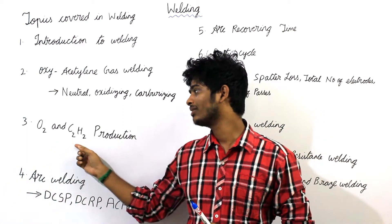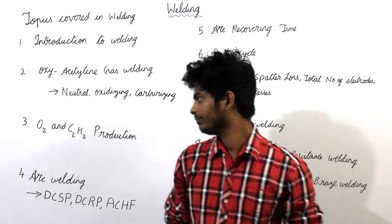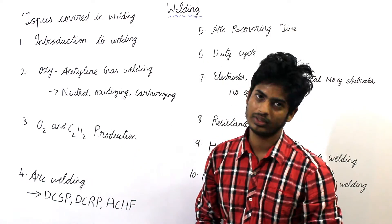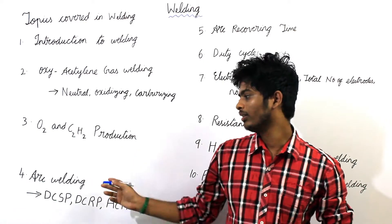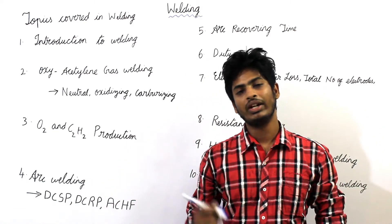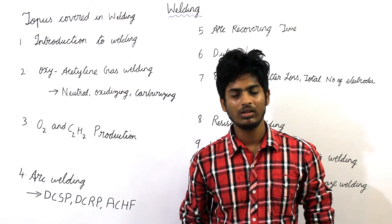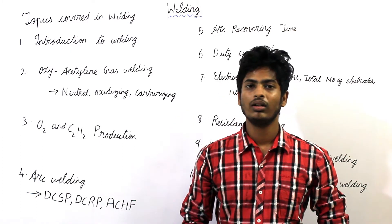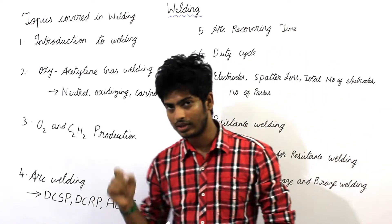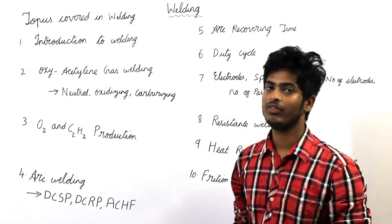Acetylene gas is mainly produced from calcium carbide. The fourth topic is arc welding process. Under this arc welding process, wherever the heat is required for melting and joining the metals, that heat is produced from an electrical arc — that is called arc welding process.